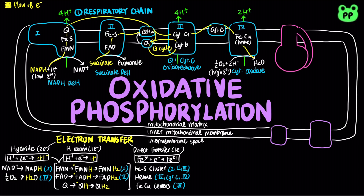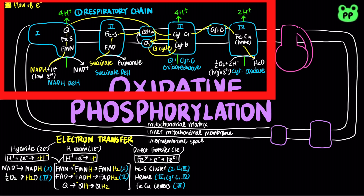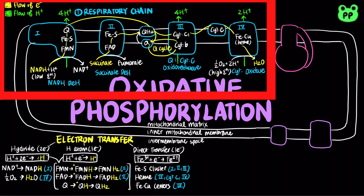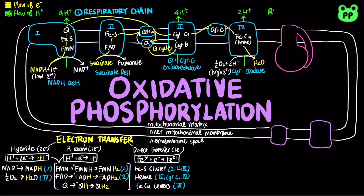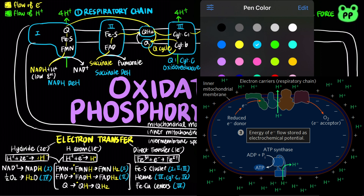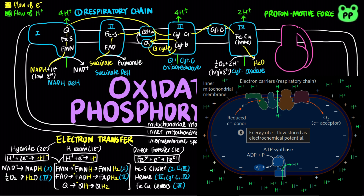The respiratory chain involves the transfer of electrons from carriers with lower reduction potential, including NADH and succinate, to the final electron carrier oxygen, which has high reduction potential. This process releases a large amount of free energy, which is coupled to the pumping of protons from the mitochondrial matrix to the intermembrane space by complexes 1, 3, and 4, conserving energy as proton motive force — the electrochemical potential energy generated by the difference in proton concentration and charge separation across the inner mitochondrial membrane.